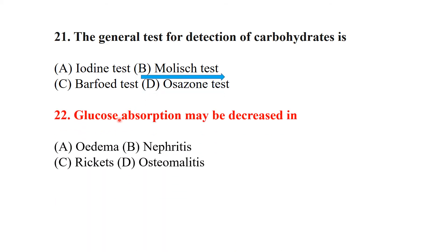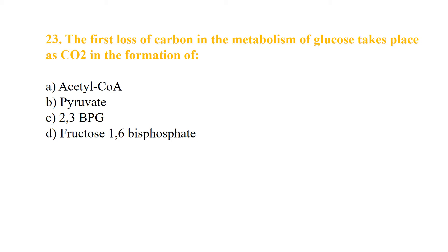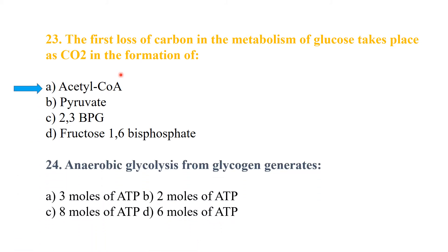Question 22: glucose absorption may be decreased in edema. Question 23: the first loss of carbon in the metabolism of glucose takes place as carbon dioxide in the formation of acetyl coenzyme A. Question 24: anaerobic glycolysis from glycogen generates 3 moles of ATP.